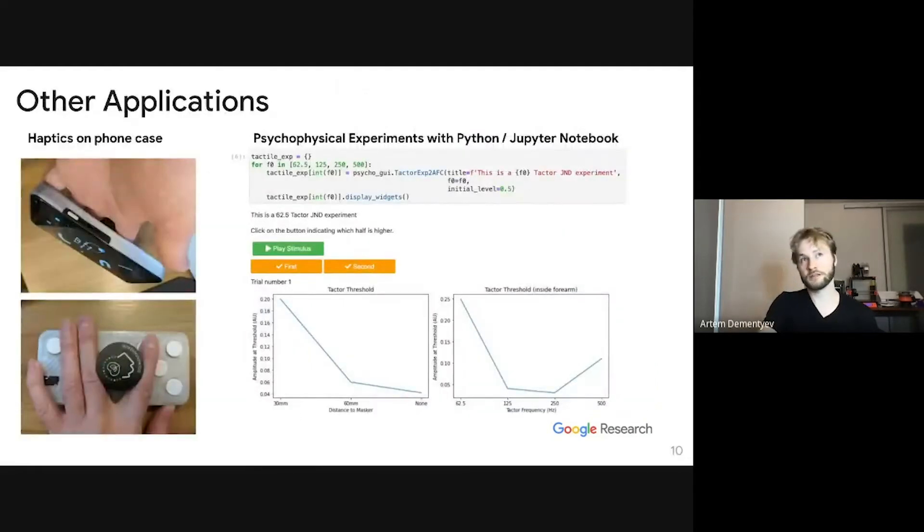We also have other applications for the platform. For example, we can put our device into the phone case form factor and explore eight actuators on the back of the phone case to provide rich haptics on the phone. And we can do psychophysical experiments integrated with Python Jupyter notebook over USB connection, so we can do such experiments quickly. We showed some just noticeable difference experiments here.